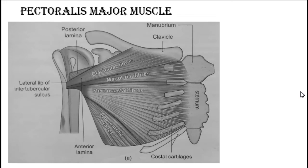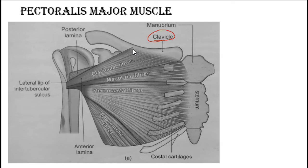Today we will start with the pectoral region muscles. First we have the pectoralis major muscle. Taking the clavicular fibers, they will take origin from the anterior surface of the medial two-thirds of the clavicle. These are the clavicular fibers.